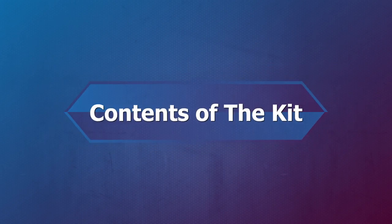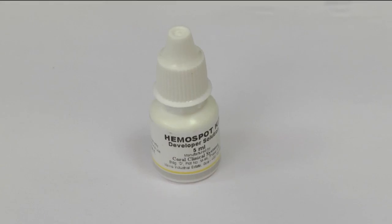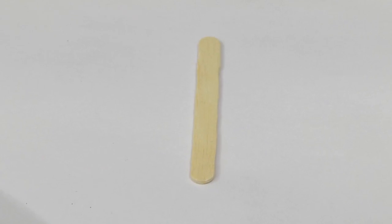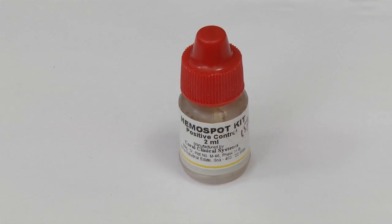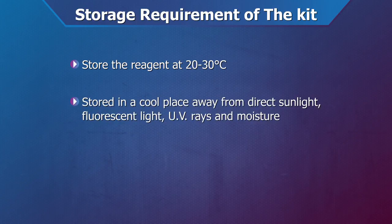Contents of the kit: Test Cards, a drop bottle containing developer solution, Sample Applicators, and Positive Control. Store the reagent at 20–30 degrees centigrade in a cool place away from direct sunlight, fluorescent light, ultraviolet rays, and moisture. Do not refrigerate. All contents are ready to use.